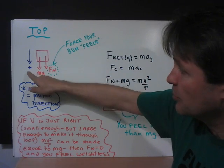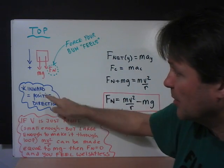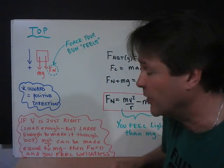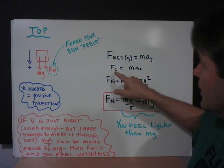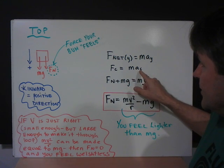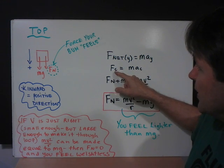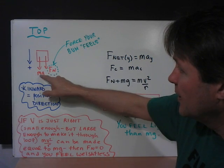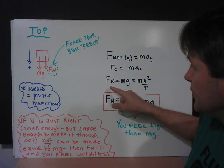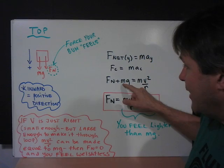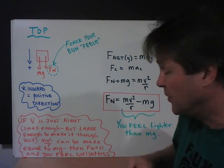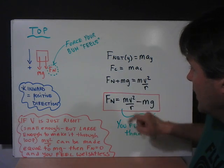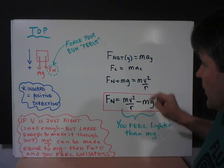Remember, inward is the positive direction. So if we analyze it, F is equal to ma, Fc is equal to mac. We have two forces here that contribute to the Fc: the normal force and your weight. Both of those forces are acting towards the center of the circle, the centripetal force, and that's equal to mv squared divided by r.